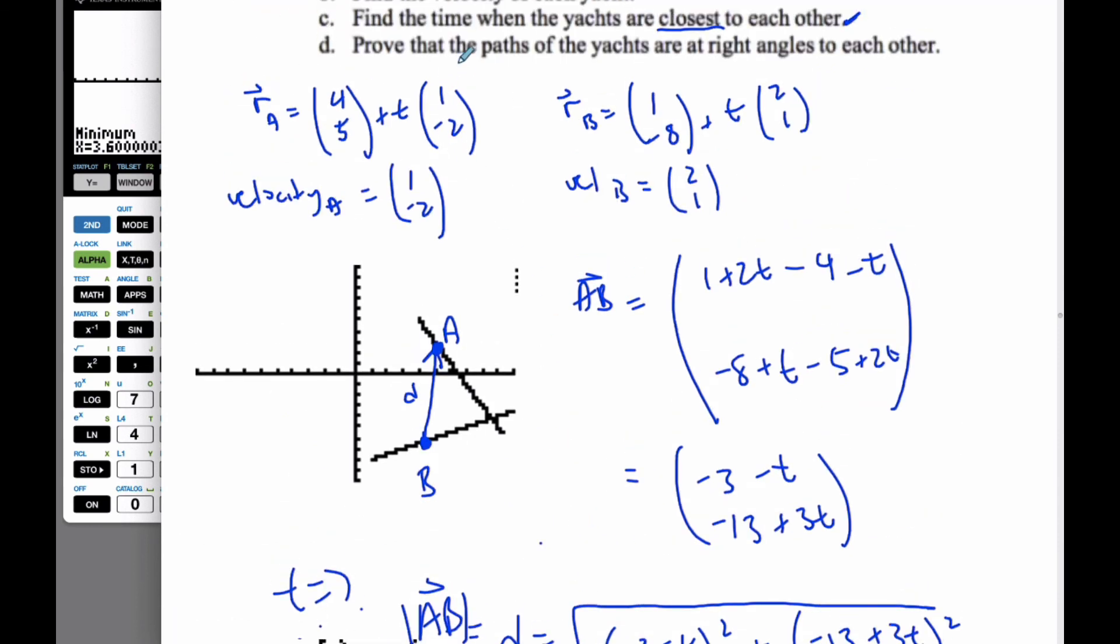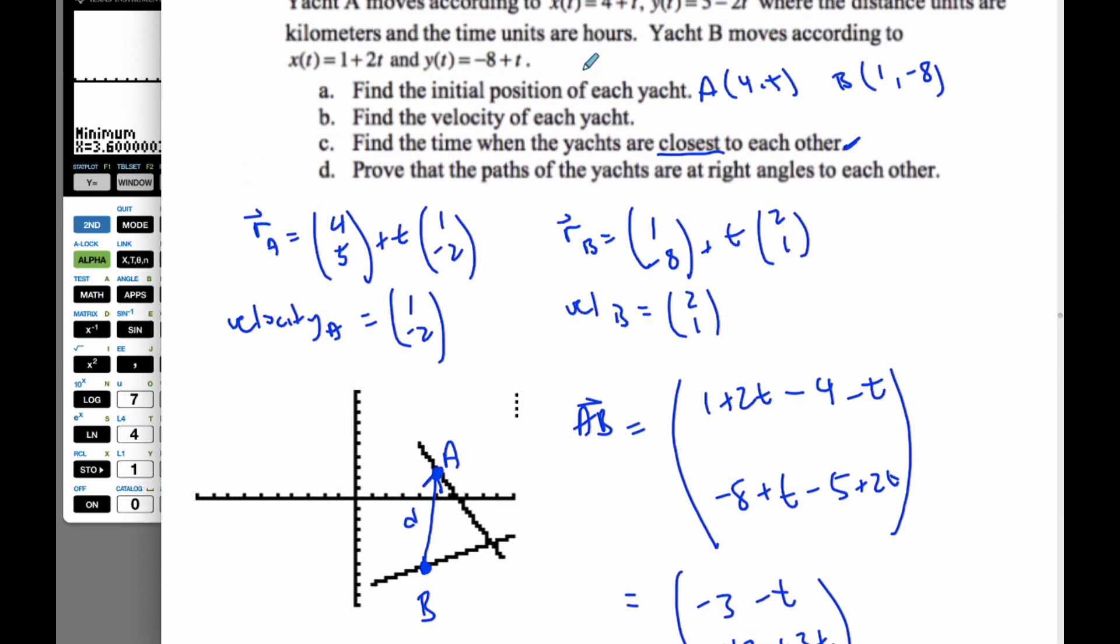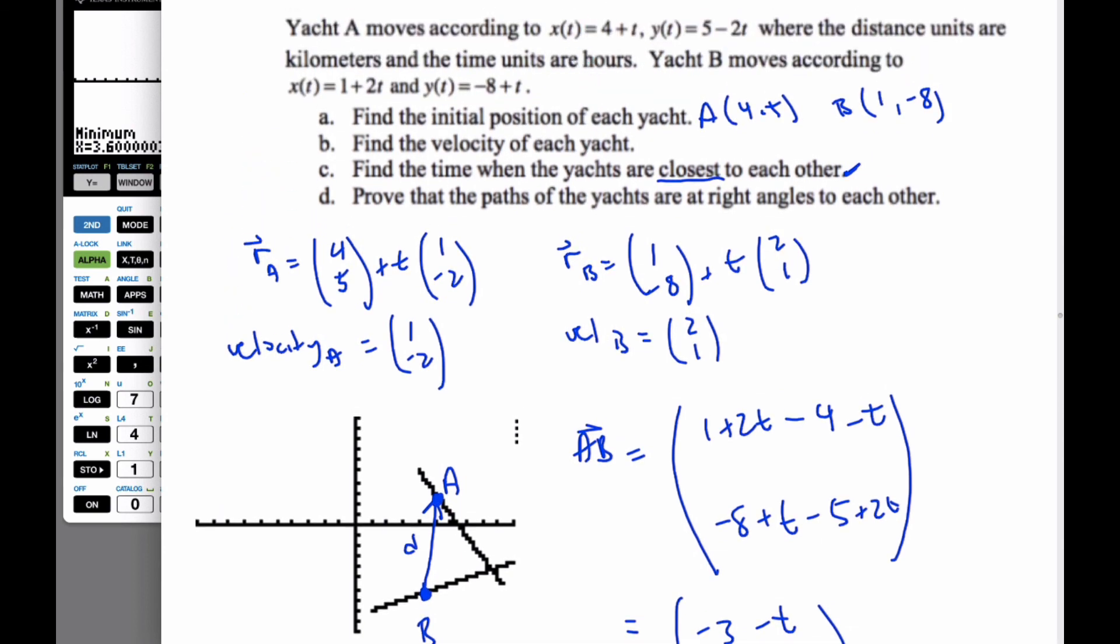And so finally, the last one is prove that the paths of the yachts are right angles to each other. Well, to do that, we know that their direction is (1, -2) and (2, 1). And if those two vectors, when I dot product them, I end up with equal to 2 minus 2, which is 0. Therefore, they are perpendicular, because the dot product is 0.